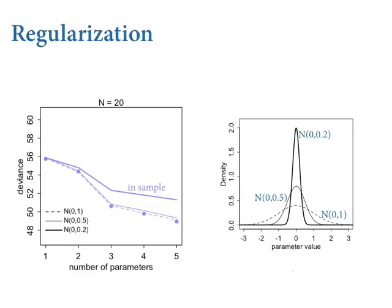In sample, the more complicated models always fit better. The points on here are the perfectly flat prior. The different lines correspond to the different regularizing priors on all the regression coefficients — not the intercept, which is still flat. The stronger the prior gets, the worse the fit to sample, because that results from the model being able to extract less from the sample — it's more skeptical, it needs more evidence to move as far away. Yet when we look out of sample, the whole relationship is flipped over, because the more skeptical priors overfit less.